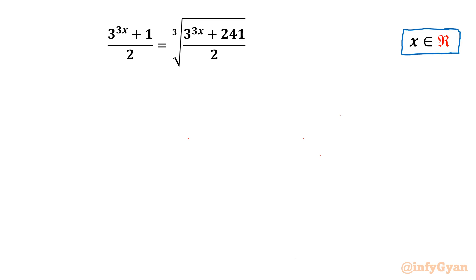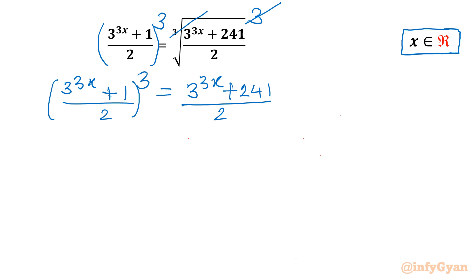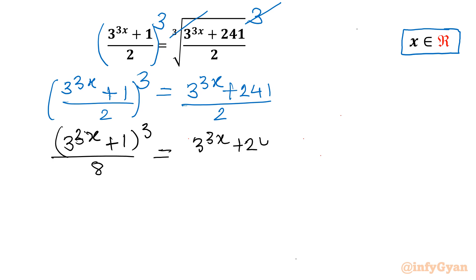Let's get started by cubing both sides. The cube root and power 3 will cancel on the right-hand side, giving us (3^(3x) + 241) / 2. On the left-hand side we have (3^(3x+1) / 2)^3, which expands to (3^(3x) + 1)^3 over 8.